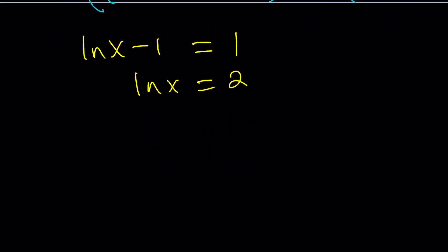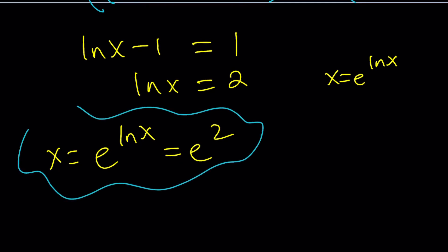ln x equals 2. And then remembering that x is equal to e to the ln x. One more time. x is equal to e to the ln x. But ln x is 2. So it's going to be e squared. So that's the answer. x equals e squared.